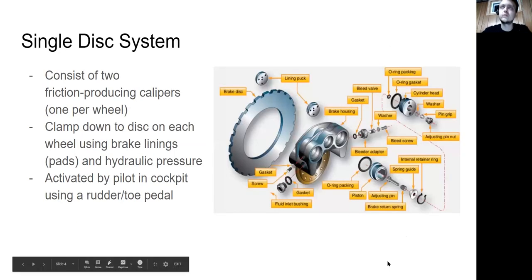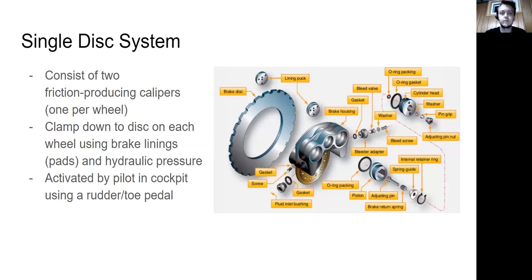Since most general aviation aircraft use a single disc system, I'm going to be focusing on a single disc system. A single disc braking system consists of two friction-producing calipers, one per wheel. These calipers clamp down onto the rotating disc on each wheel using brake linings, otherwise known as brake pads, and hydraulic pressure.